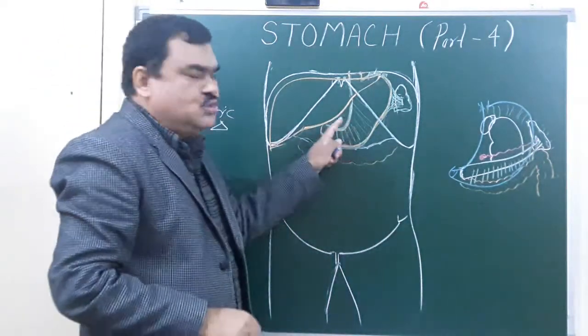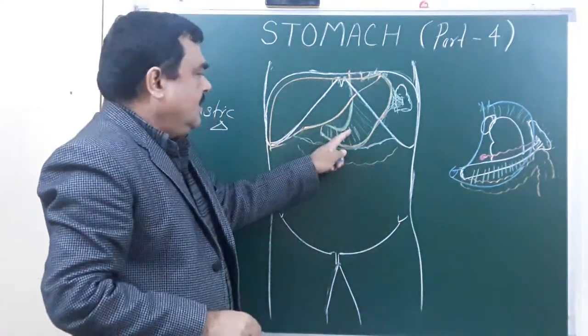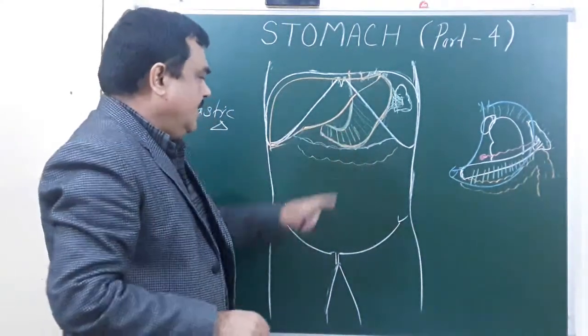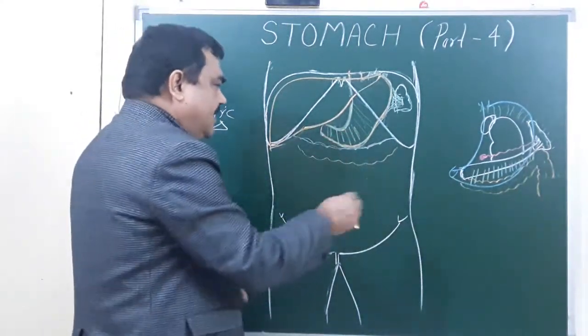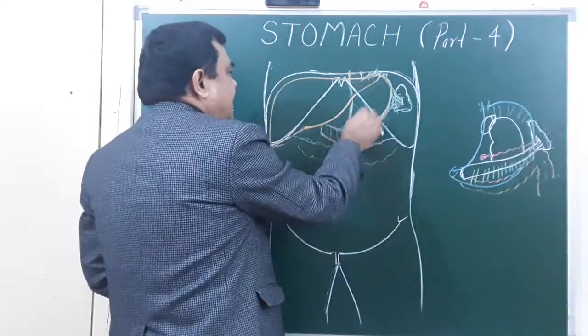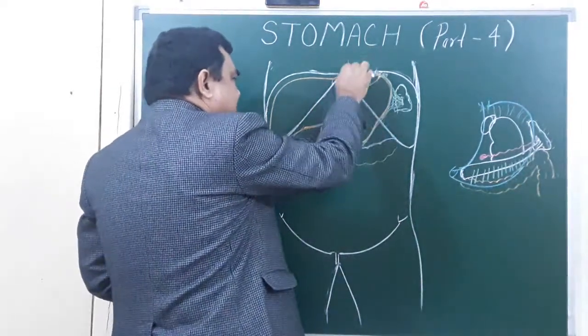This triangle is used for feeding — a feeding tube is inserted here, in case of obstruction.